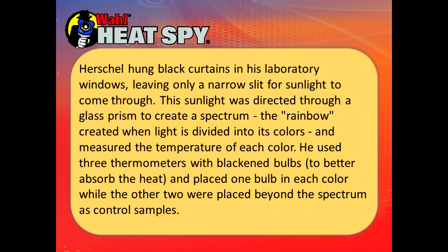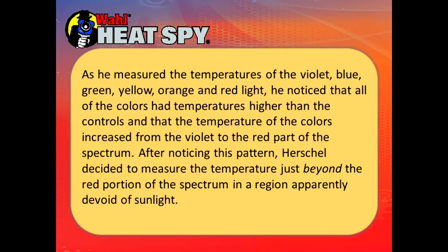He hung black curtains in his laboratory windows, totally sealing them off except for a very narrow slit for sunlight to come through. This sunlight was directed through a glass prism to create a spectrum — the rainbow created when light is divided into its colors — and measured the temperature of each color separately using a liquid and glass thermometer. He used three thermometers with blackened bulbs, which heat up faster to better absorb the heat, and placed one bulb in each color while the other two were placed beyond the spectrum as control samples. As he measured the temperatures of violet, blue, green, yellow, orange, and red light, he noticed that all colors had temperatures higher than the controls and that the temperature increased from the violet to the red part of the spectrum.